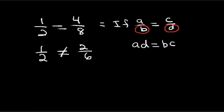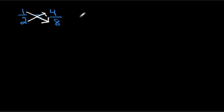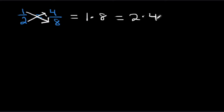Let's take a look at another example. Let's say we have one half equals four eighths. This is a proportion simply because when we cross multiply, they are in proportion. That means one times eight is equal to two times four — because they're both eight, eight is equal to eight.